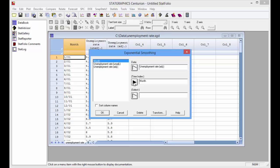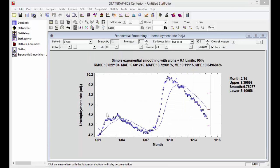Month contains the time indices. When I press OK, the statlet opens up. The statlet begins by using an alpha value of 0.1. This obviously does not track the data very well.